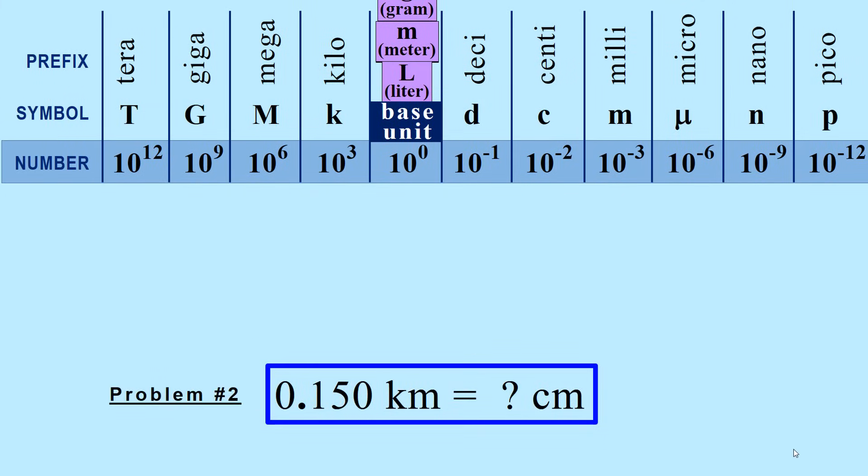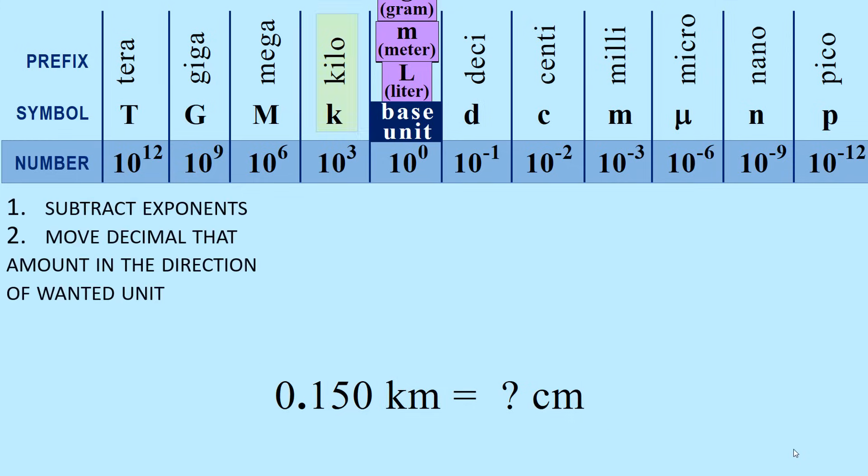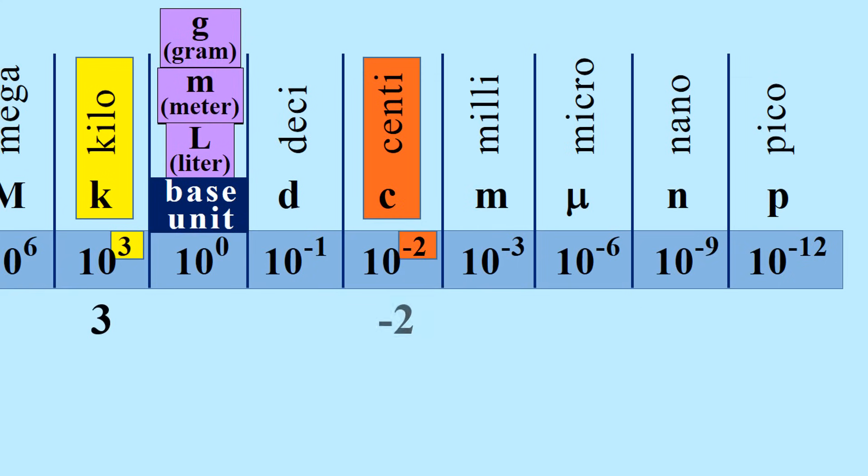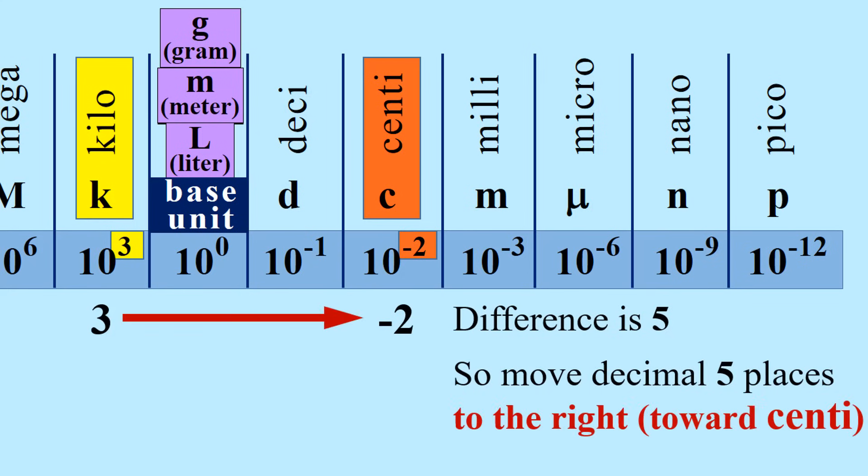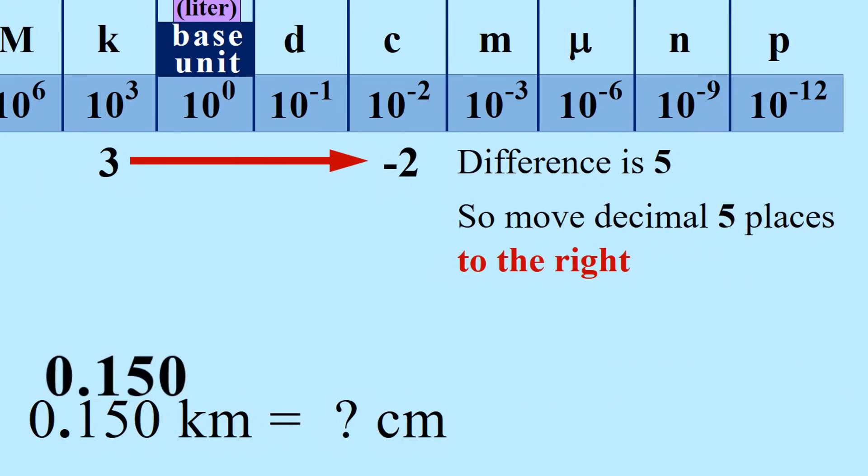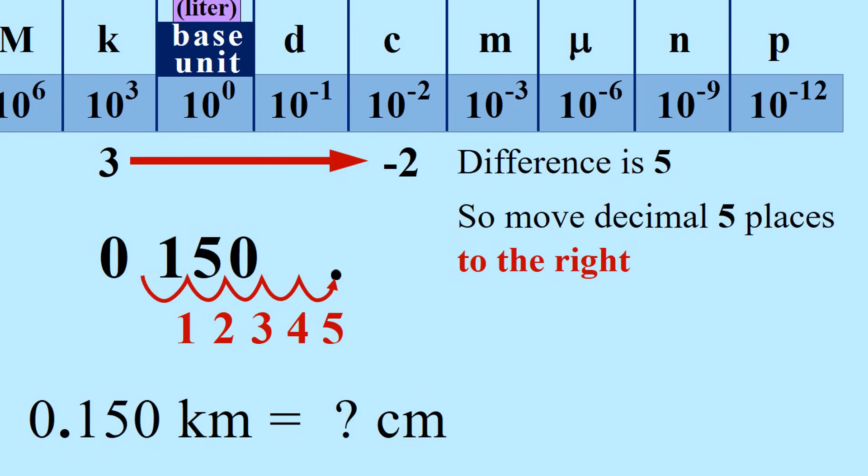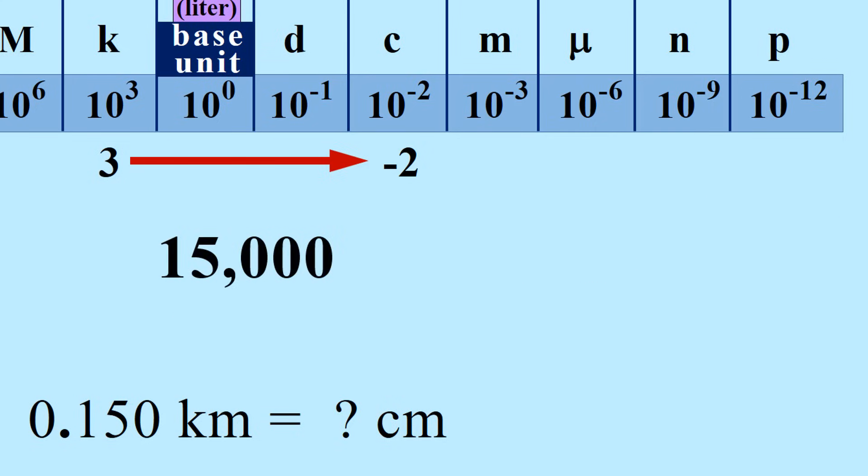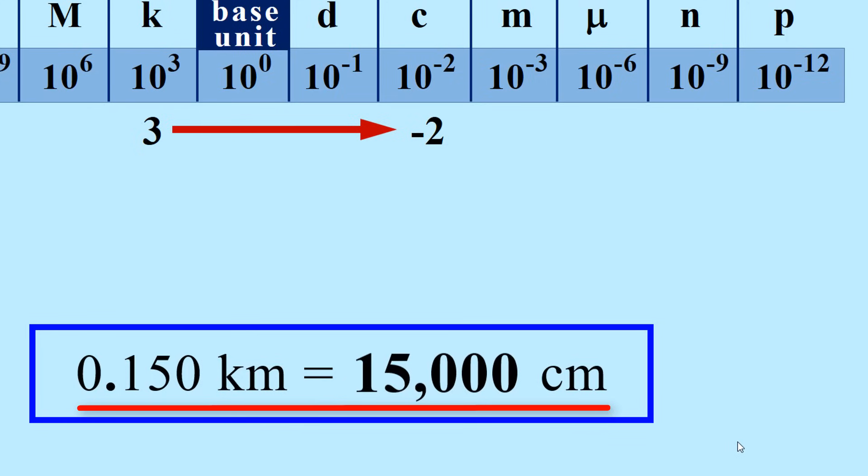Next problem, 0.150 kilometers is equal to how many centimeters? Using the same two steps, we see that we are starting with kilo and want to get to centi. Exponent for kilo is 3, and for centi is negative 2. We subtract and get a difference of 5, so the decimal is moved 5 places to the right, toward centi, the wanted unit. 0.150, moving the decimal 5 places to the right. Note there are now blank spaces. Always fill in the blanks with zeroes. So we now have 15,000. There are 15,000 centimeters in 0.150 kilometers.